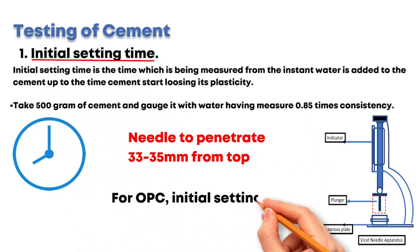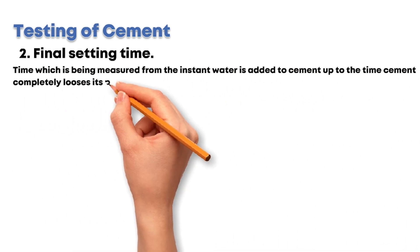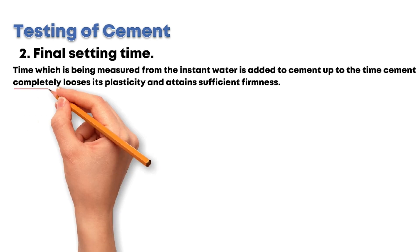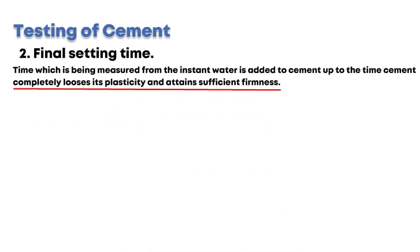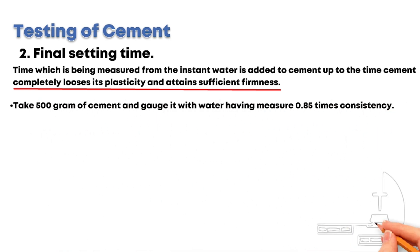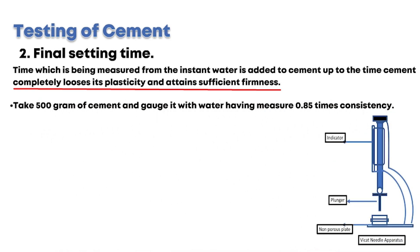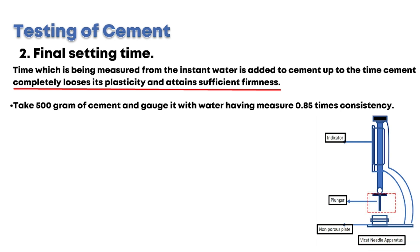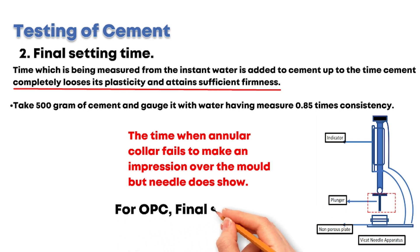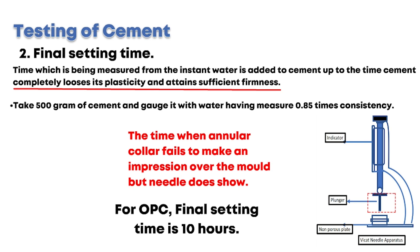For ordinary Portland cement, the initial setting time is 30 minutes. Final setting time is the time measured from the instant water is added to cement up to the time cement completely loses its plasticity and attains sufficient firmness. Take 500g of cement and gauge it with 0.85 times consistency. Lower the annular collar with needle gently and release it quickly. Final setting time is the time when the annular collar fails to make an impression over the mold but the needle does. For ordinary Portland cement, the final setting time is 10 hours.